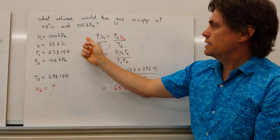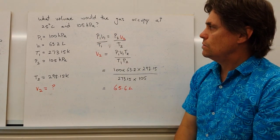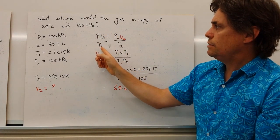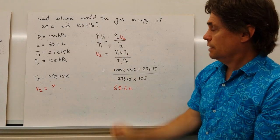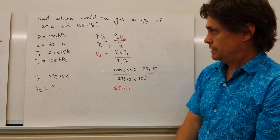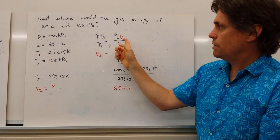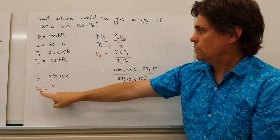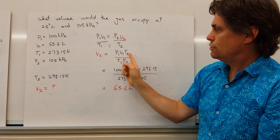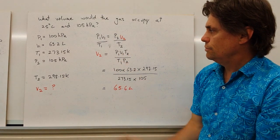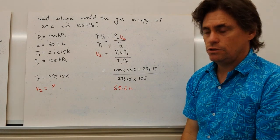So in this case we use the combined gas law, P1 V1 over T1, our initial set of conditions, equals P2 V2 over T2, our final set of conditions. And if we rearrange for our second volume, P1 V1 T2 over T1 P2 gives us our second volume.